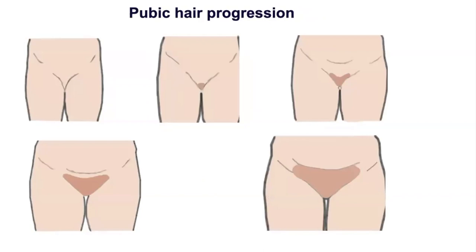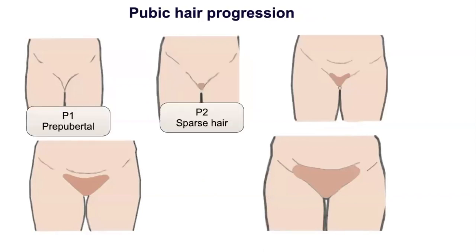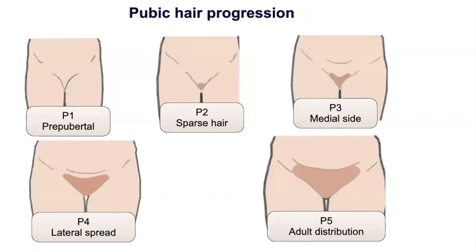Pubic hair in females progresses systematically through various stages and occurs simultaneously with thelarche, or it may precede it in 15% of cases. Pubic hair development occurs because of adrenal androgens and ACTH, hence it progresses continuously despite suppression of gonadal androgens in cases of central precocious puberty treated with GnRH analogues.